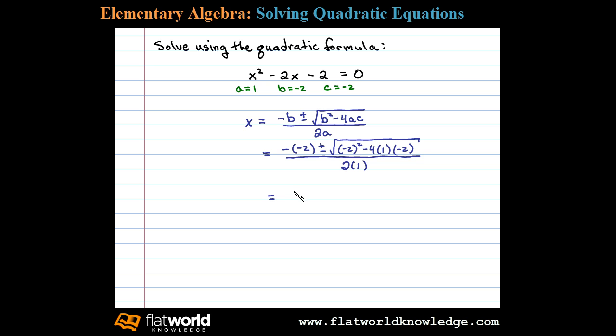Now simplifying in the numerator, we have negative negative 2, that's going to be positive 2, plus or minus the square root: negative 2 squared is 4, now negative 4 times 1 times negative 2 is plus 8, divided by 2. 4 plus 8 is 12, and we're left with 2 plus or minus the square root of 12 divided by 2.